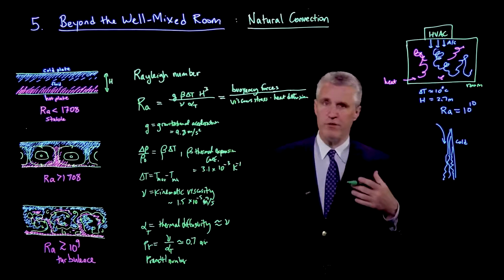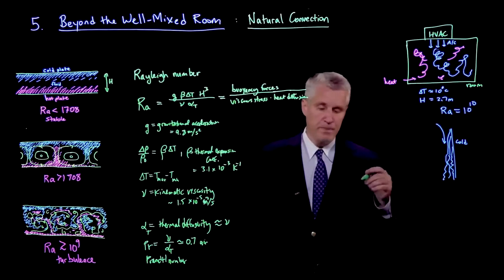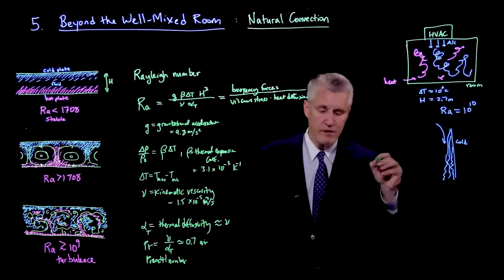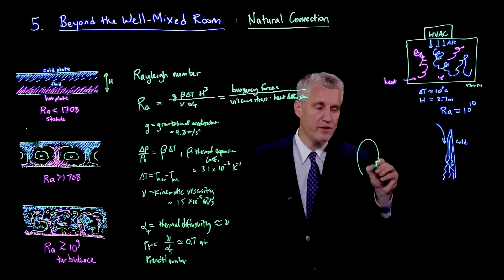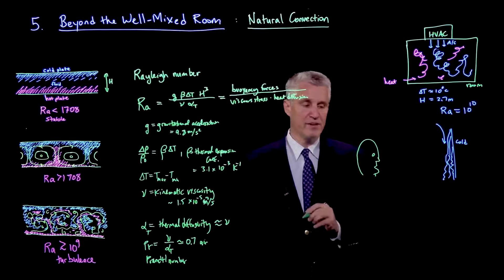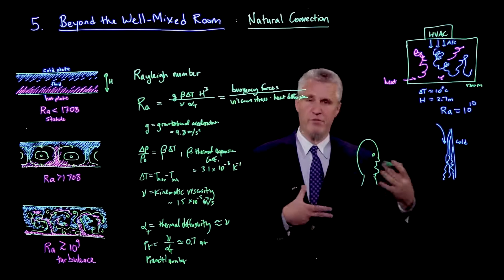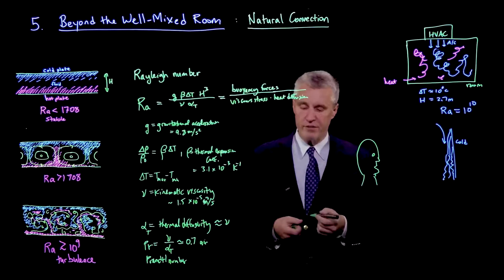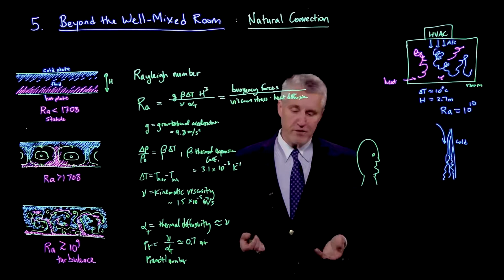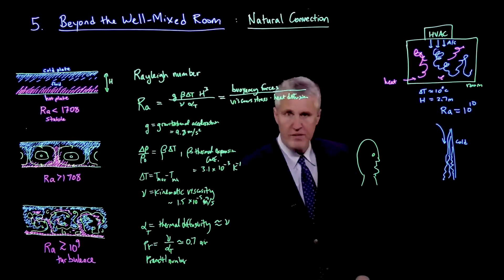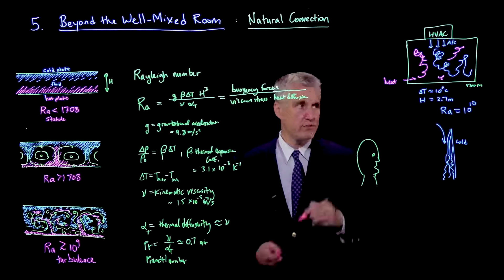If the Reynolds number gets high enough, this flow can actually become itself unstable as it goes down the surface. You can see these rising or falling plumes of natural convection near vertical surfaces that are heated or cooled relative to the environment can also lead to complex flows. A good example of that is the flow that occurs around a person just simply due to the temperature. If you look very closely at a person, the body has a temperature which is usually higher than the ambient by at least 10 degrees, if not more.